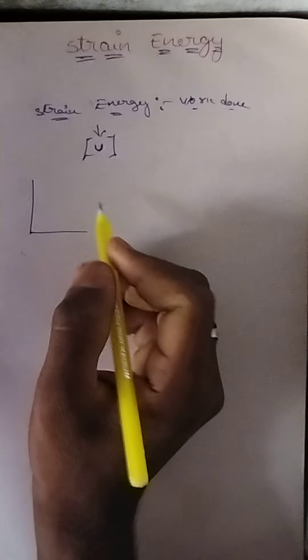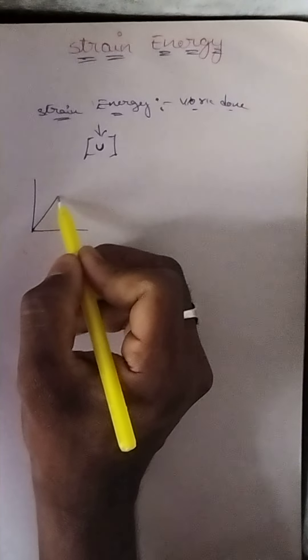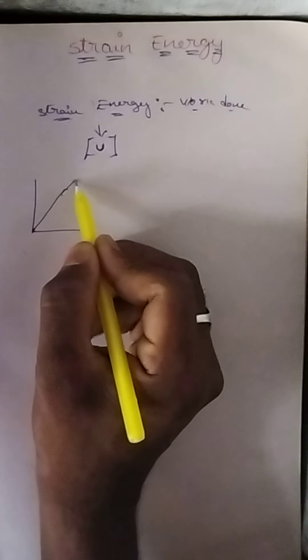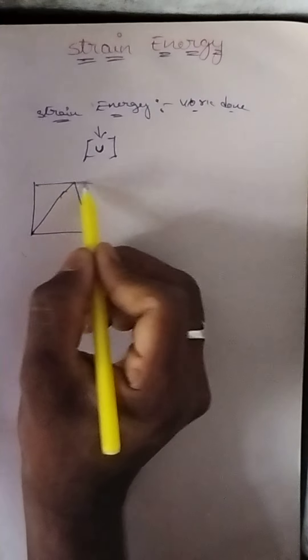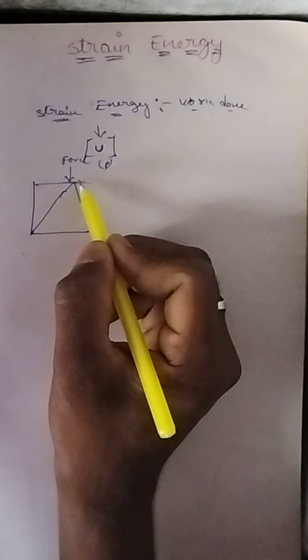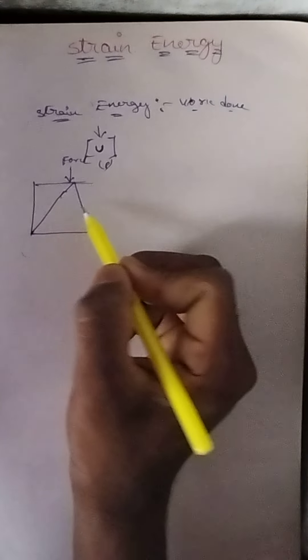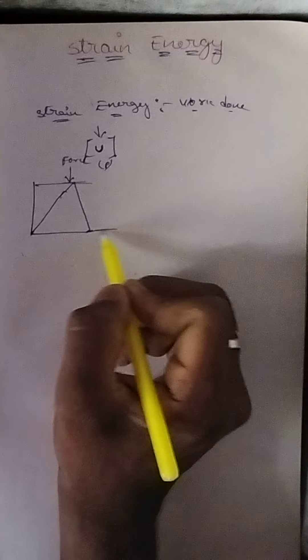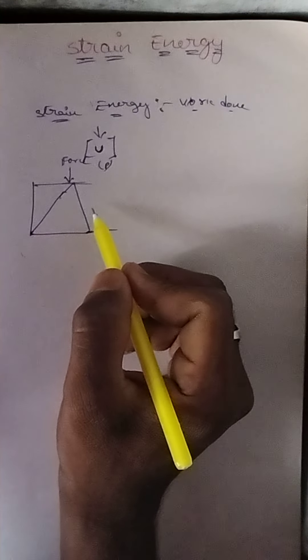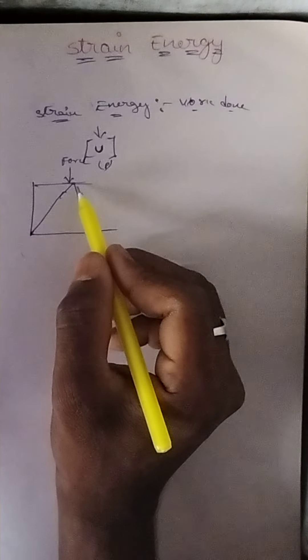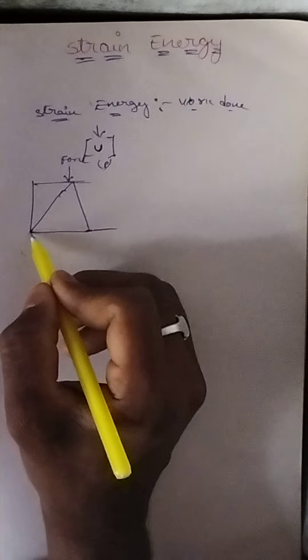For example, consider a triangular section object. If you apply a force P on top of the object, it compresses the object and changes its length.